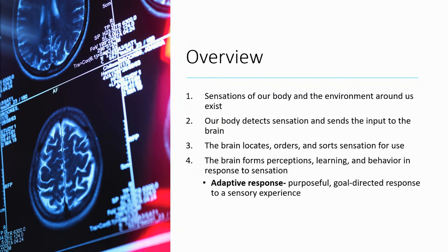The overview of sensory integration breaks down into steps: first, sensations from the body and environment are present — visual input, hearing, touch, proprioceptive, vestibular, and all of those. Your body detects the sensation and sends the input to the brain. The brain then locates, orders, and sorts the sensation for use, and can form perceptions, learning, and behavior in response. A key aspect of functioning is the ability to adapt to different environments and senses, which is referred to as the adaptive response — a behavior conducted in response to those perceptions formed by the brain.